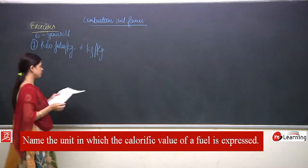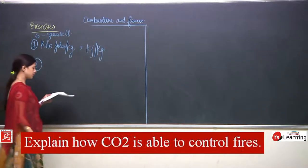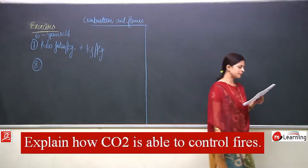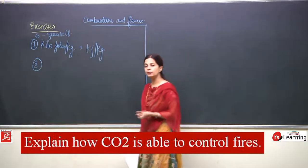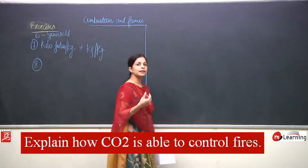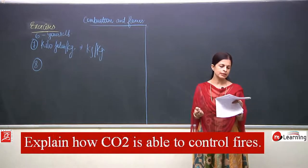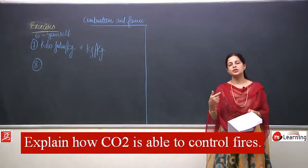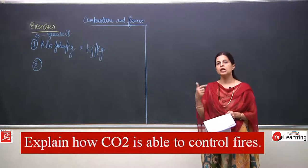Question 8: 'Explain how CO2 is able to control fire.' For combustion, oxygen is required. If oxygen is not available or gets reduced, the combustion will automatically reduce and stop. When a CO2 hose is opened, CO2 is released, which reduces the amount of oxygen, and since oxygen is required for combustion, the fire is controlled.